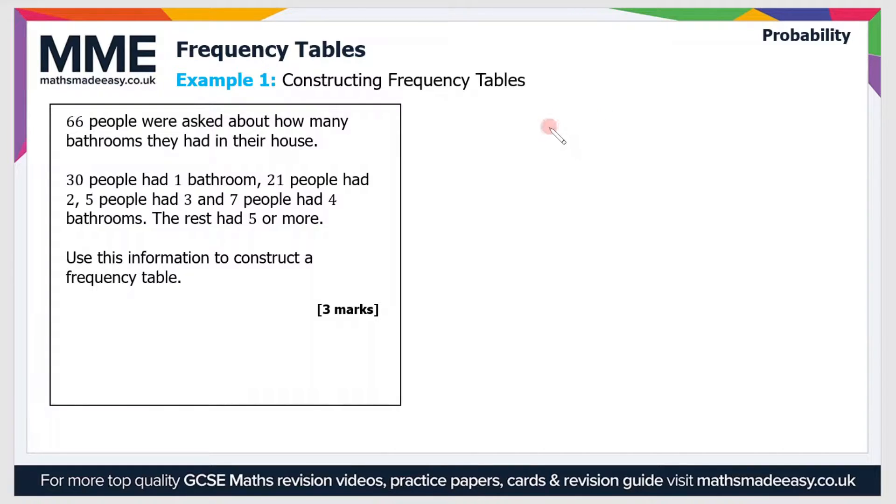Our frequency table has two columns. The first column will be number of bathrooms, and the second column will be frequency. Let's draw our table. The options people have are 1 bathroom, 2 bathrooms, 3 bathrooms, 4 bathrooms, and the final option is 5 or more.